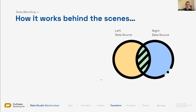Data blending: how it works behind the scenes. Today we're just talking about left join, not the other types of join, for the sake of simplicity, because on its own it can be confusing. We don't want to dive into different types of joins at the same time that we want to talk about data blending. In this diagram, each one of these circles represents a data source — this is our Google Analytics data, and this other circle is our CRM data.